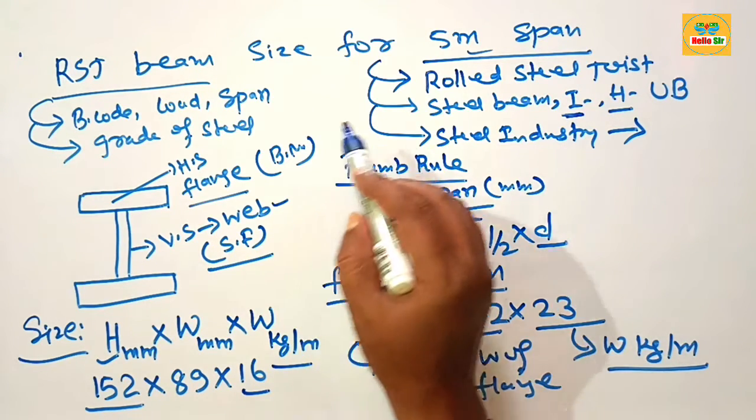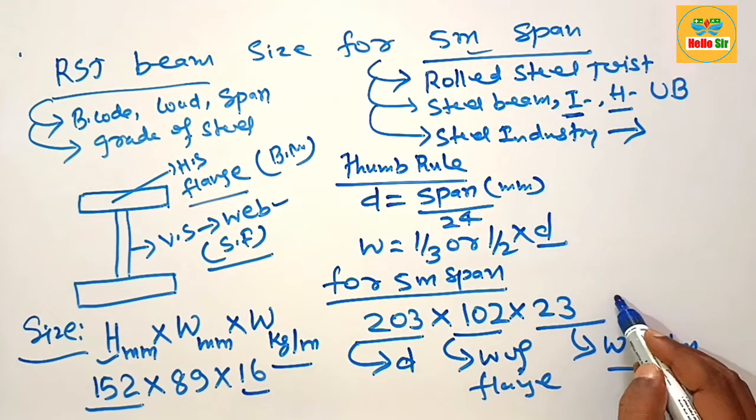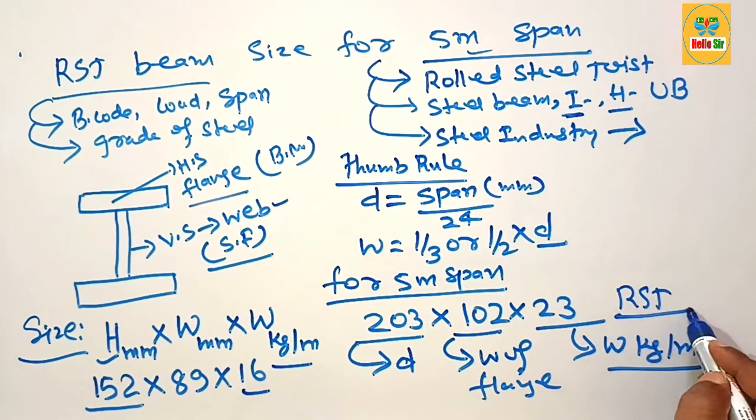And 23 is weight of RSJ beam in kilogram per meter. It means for the span length of 5 meter you need something like this RSJ beam. Thank you.